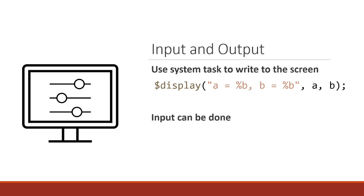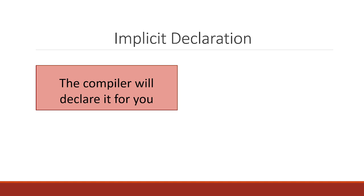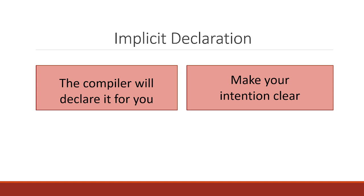Inside the format string, the '%b' marks where in the message a variable will be printed, and also notes how the variable should be printed — 'b' is for binary, printing out the ones and zeros or X or Z of each bit. The number of '%b' tokens needs to equal the number of variables in the arguments. Input to the simulation can be done by way of a test bench — we can write code to feed values to our modules from the outside. We can also initialize memories with data files using the `$readmemb` and `$readmemh` system tasks.